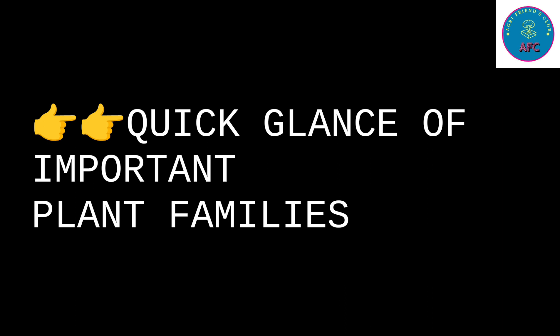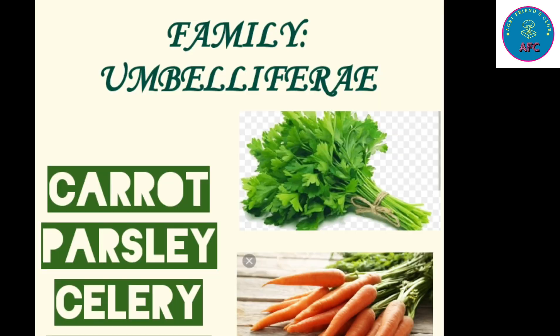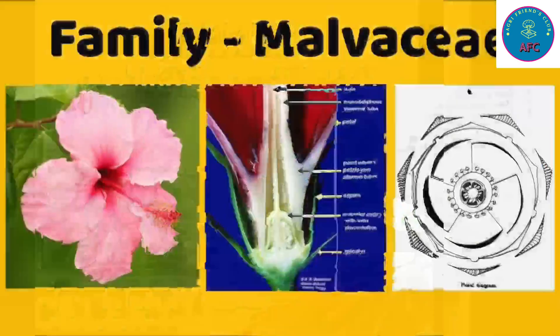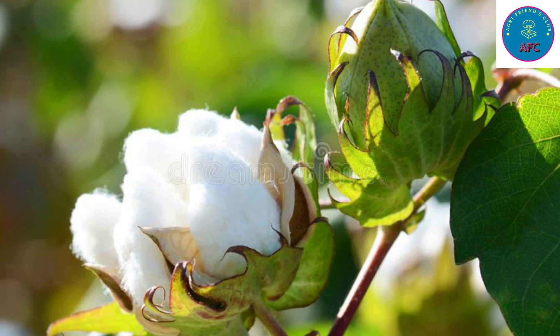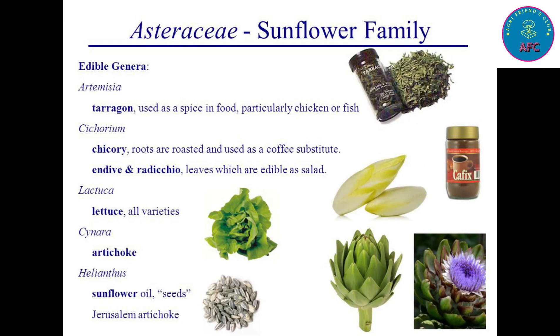Now let's have a quick glance at important plant families. The Apiaceae (Umbelliferae) family includes crops such as carrot, parsley, and celery. The next important family is Malvaceae — crops under Malvaceae include cotton and hibiscus. Next is the sunflower family, Asteraceae.